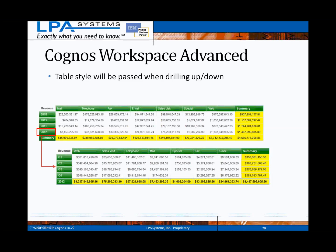This screenshot illustrates that cross-tab styles are now retained when drilling up and drilling down. In this case, drilling under year 2012 shows individual quarters for 2012 but maintains the color and style of the original cross-tab, including any conditional formatting of the cell values.